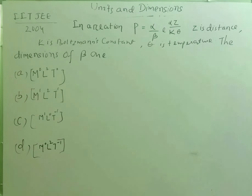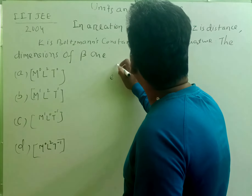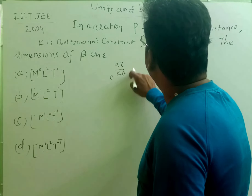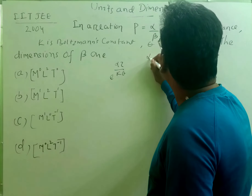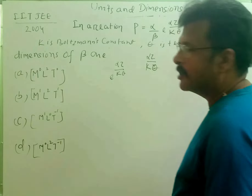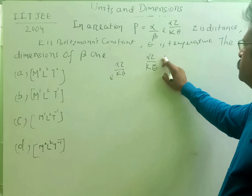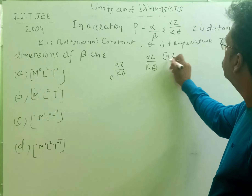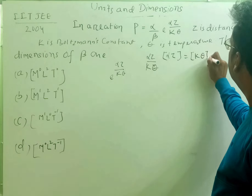We know that anything written in the power of an exponential must be dimensionless. So alpha z divided by k theta must be dimensionless, meaning it has dimensions M⁰L⁰T⁰. Therefore, alpha z must have the same dimensions as k theta.